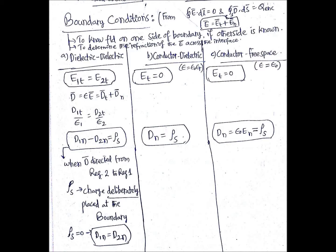To know the field on one side of a boundary if the other side is known, we need to use these conditions. They are also useful to determine the refraction of the electric field intensity E across the interface.